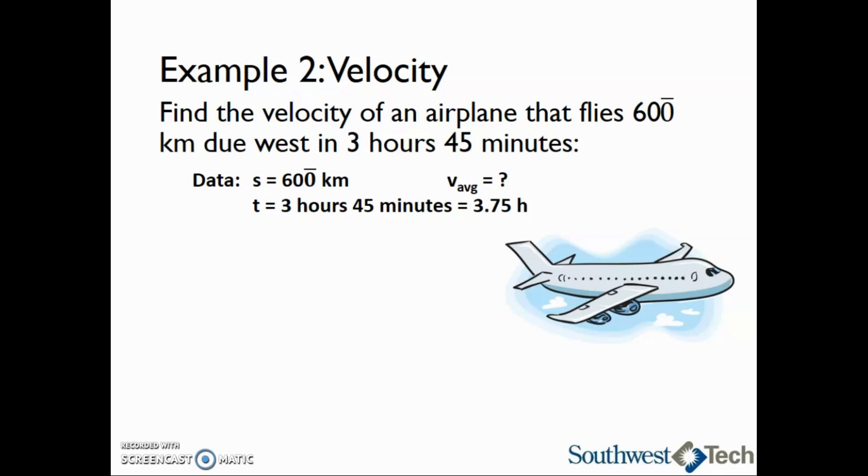However, we need time to have only a single unit, so we will convert the time to hours. 45 divided by 60 is 0.75, so the total time is 3.75 hours. We are trying to find the velocity, so that will be v_avg. The basic equation for velocity is s equals v_avg times t. The working equation is where we rearrange for the unknown variable, which is v_avg. v_avg equals s divided by t.